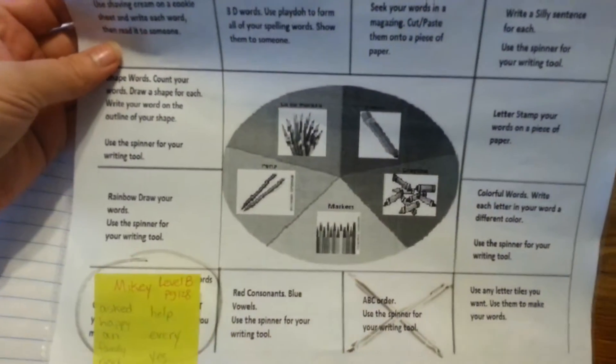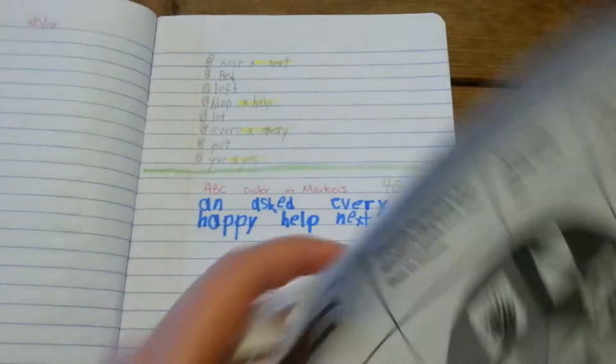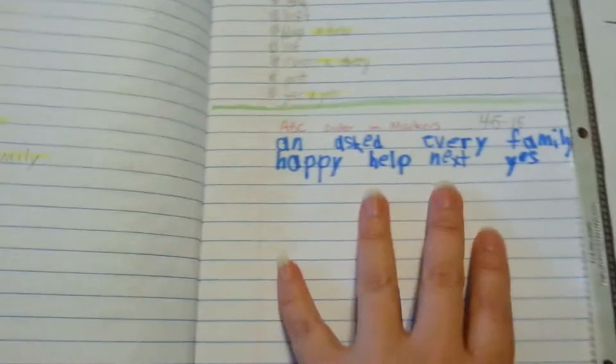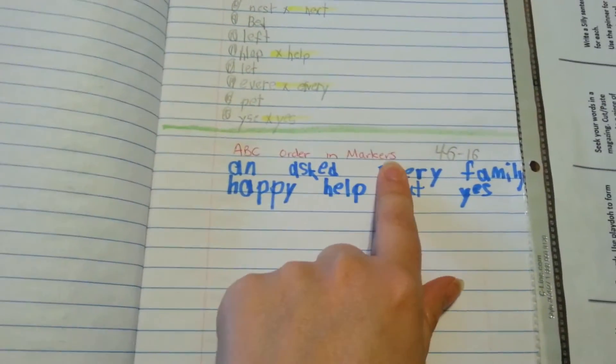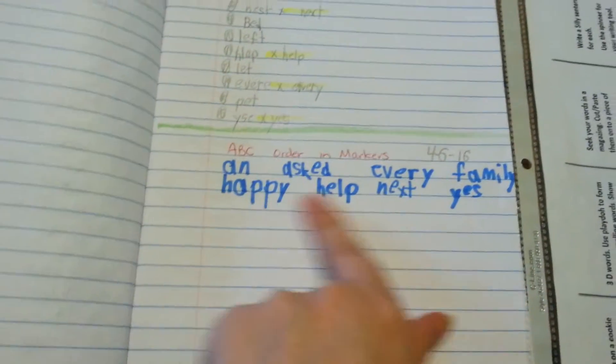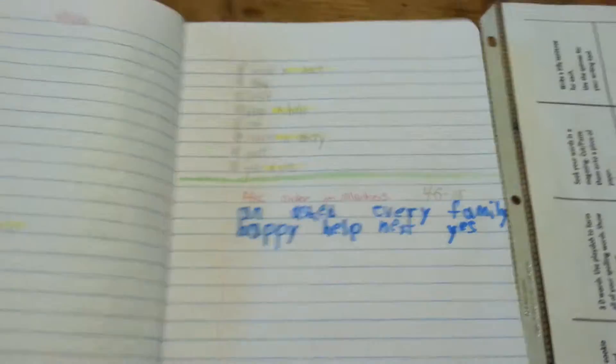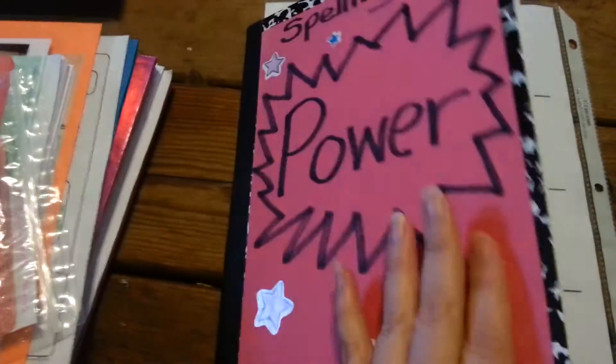Basically it has like the different types of writing: markers, pens, crayons, pencil, color pencils. And he just spins kind of like a little paper clip and it tells him what to use for the activities that are on the board here. For today, he ended up doing the ABC order in markers. So he just picked his blue marker and did that. And he already picked his game for tomorrow, and I will show that when I do the next video.